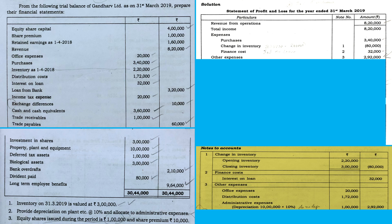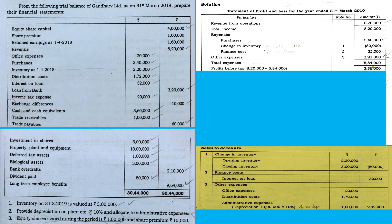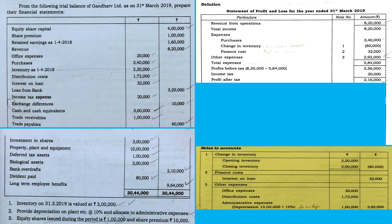Now we have included almost all the expense items. Take the total of expenses — you will get 5,84,000. We have the total of income as well as total of expenses, so you can easily identify the profit before tax. Profit before tax is total income minus total expenses: you will get 2,36,000. From that, you need to adjust the tax amount. Income tax expenses is already mentioned — deduct the tax amount of 20,000. You will get profit after tax: 2,16,000.